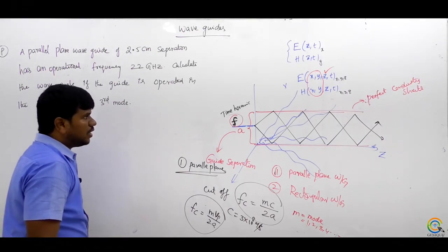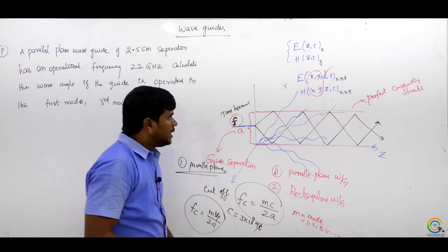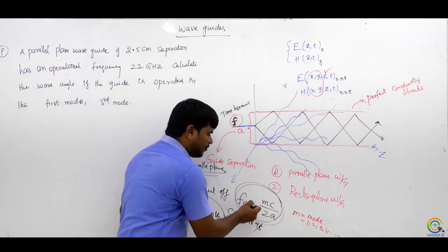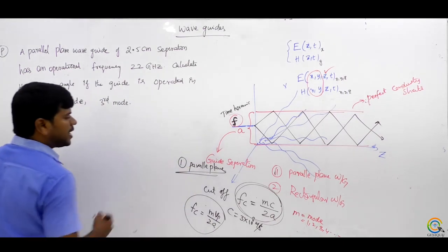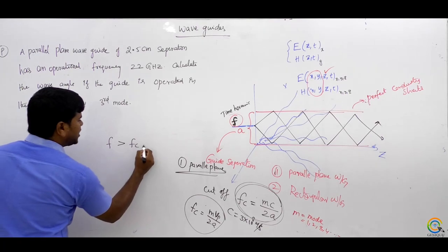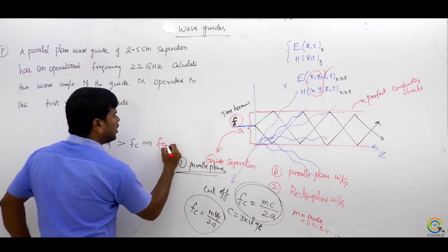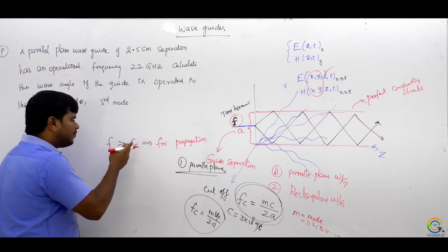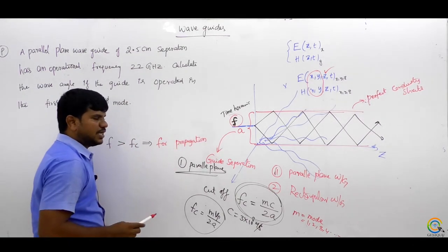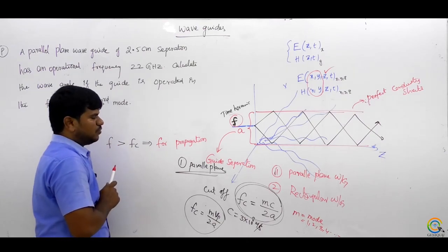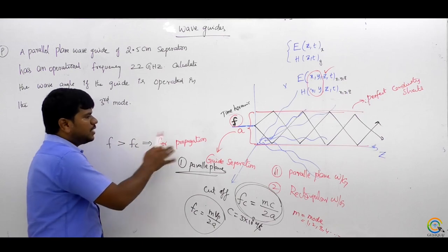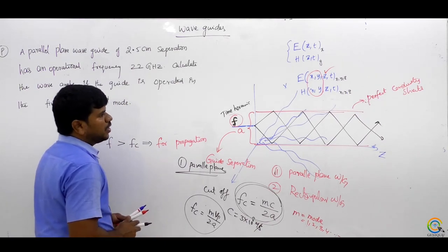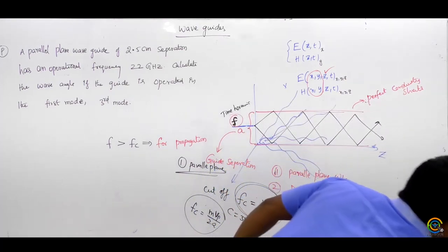For propagation to happen, f must be greater than fc. If f is less than fc, there is no propagation. If f equals fc, there is also no propagation.